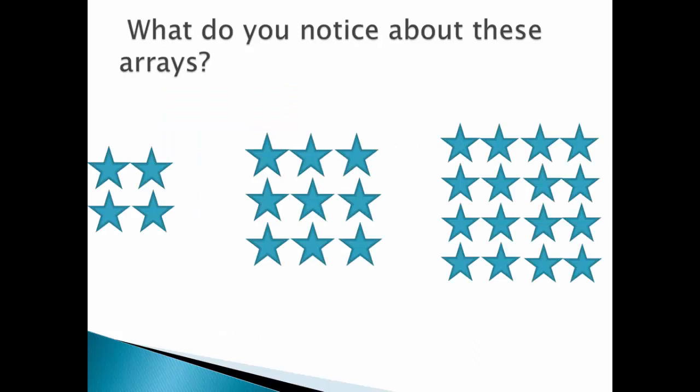So what do you notice about these arrays? They have the same number of rows and columns. Two by two, three by three, four by four. We multiply to figure out how many stars. Two times two is four. Three times three is nine. Four times four is 16.